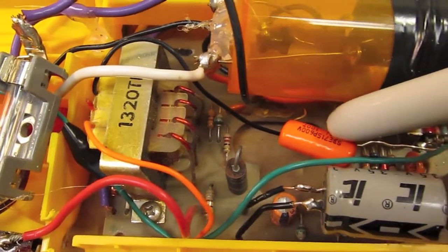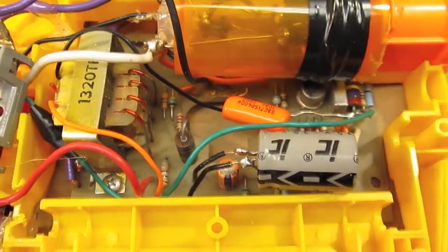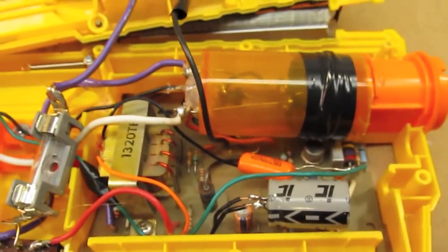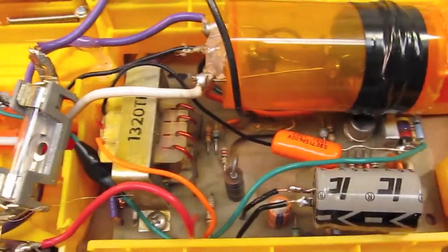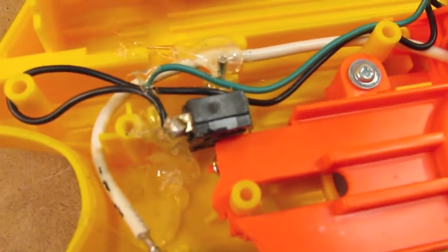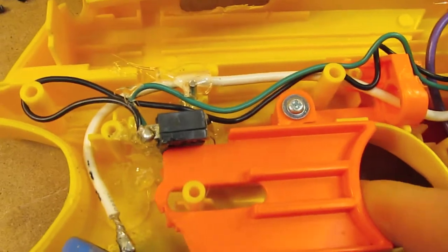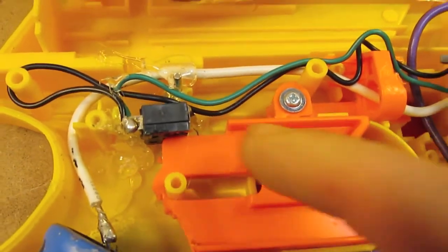This orange capacitor here bypasses the strobe timing circuit and provides a 200-ish volt source that is then dumped through this micro switch which the trigger hits. The trigger goes back and hits the micro switch. That dumps the capacitor into the trigger transformer there which sends a high voltage pulse to strike the flash tube which you can see down there in the barrel.